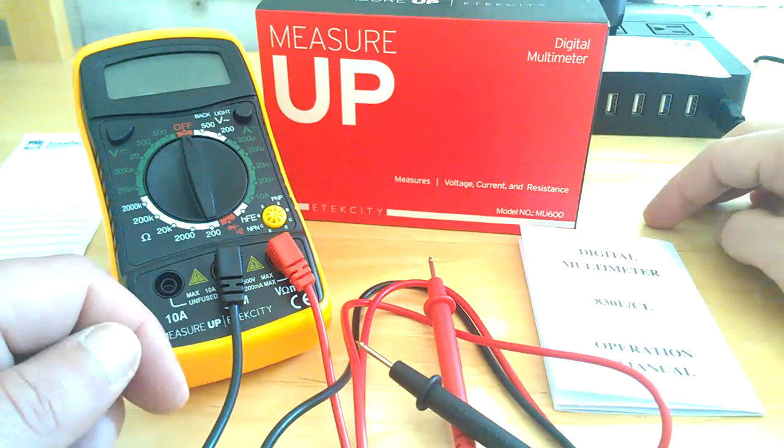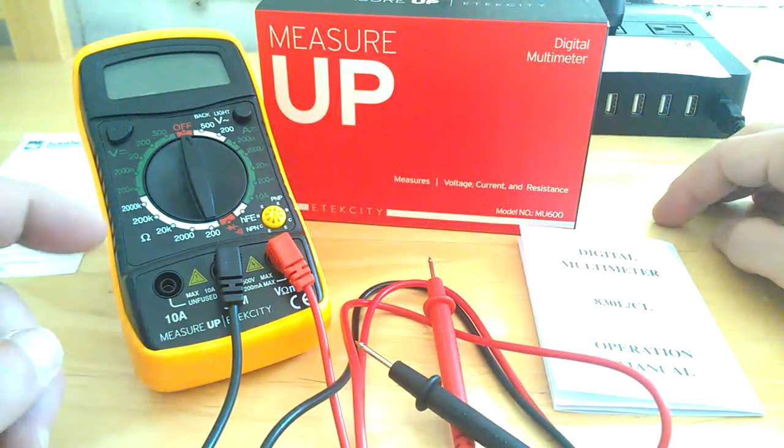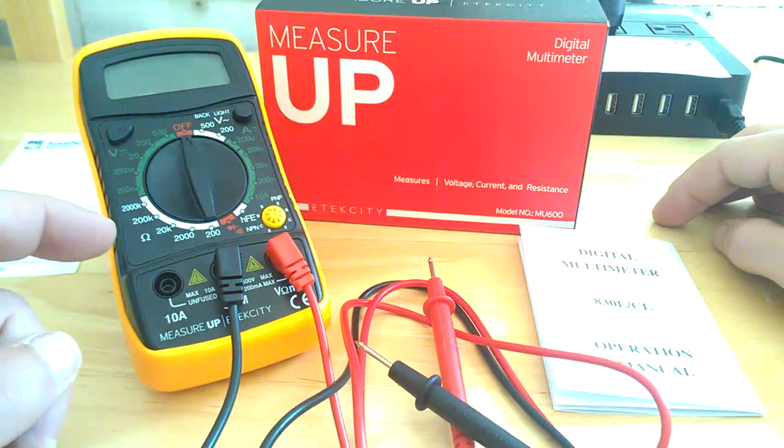This is for the E-Tech City Digital Multimeter. It is the manual model, model number MU600.